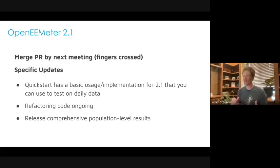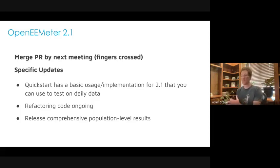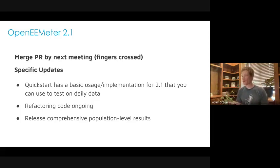There will be a quick start guide — a notebook that Jason at Recurve has led the development of. This will help you get up and running, explain what's going on, and allow you to run some simple models on daily data. We're also continuing to refactor the code — Travis led the development of the code base, and now we're refactoring it so that it fits nicely within Open E-Meter and can be run in a scalable and transparent way. Hopefully by the next meeting we'll be done or nearing completion with 2.1, which is very exciting.